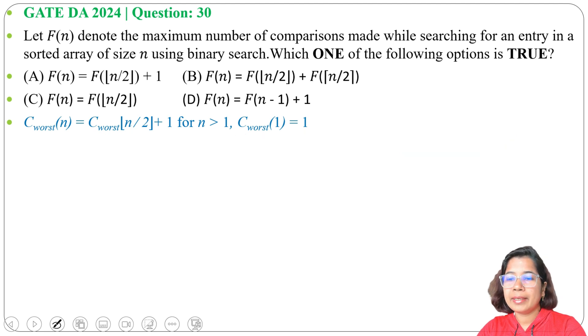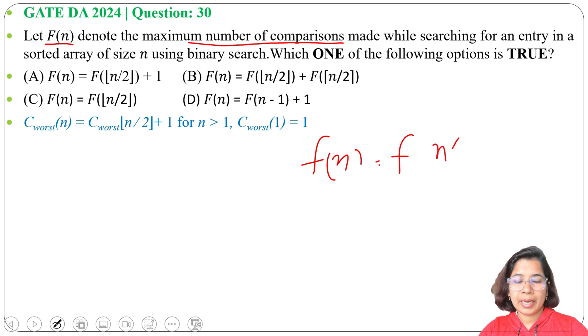And in worst case, number of comparisons equals to floor of n divided by 2 plus 1. And here it's written F(n) denotes the maximum number of comparisons. So you can write F of n equals to F of n divided by 2 floor function plus 1.